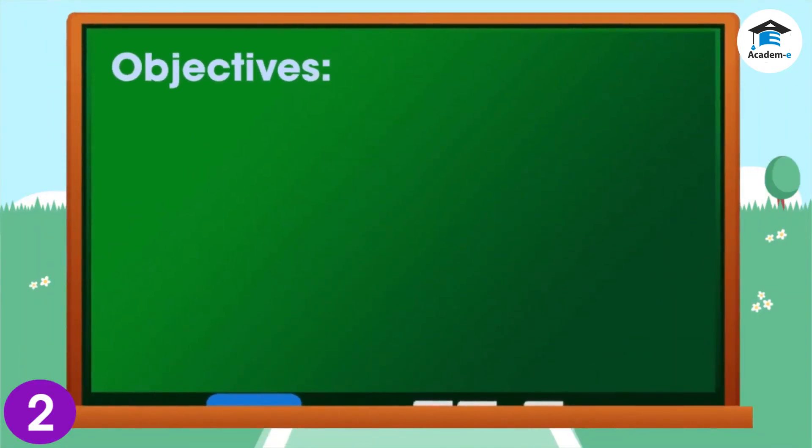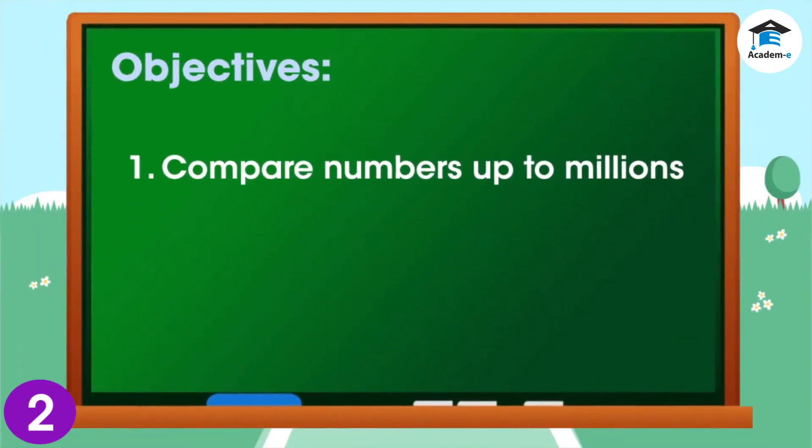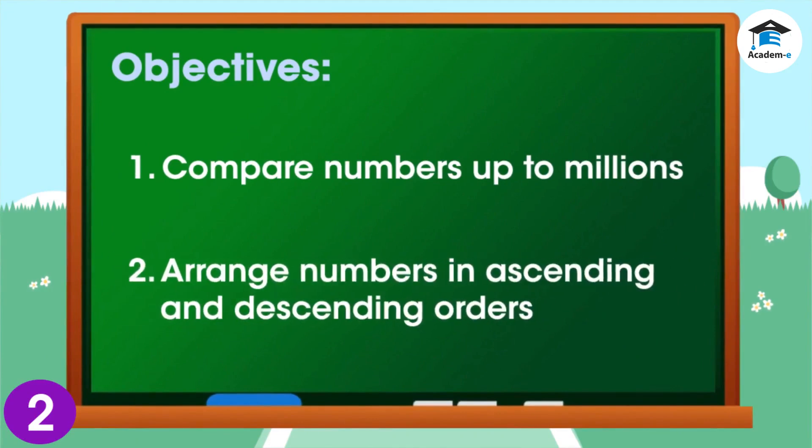Objectives: At the end of the lesson, you should be able to compare numbers up to millions, and arrange numbers in ascending and descending orders.